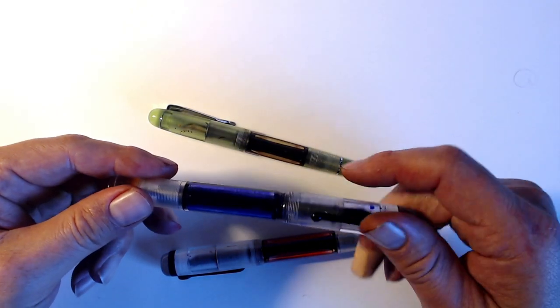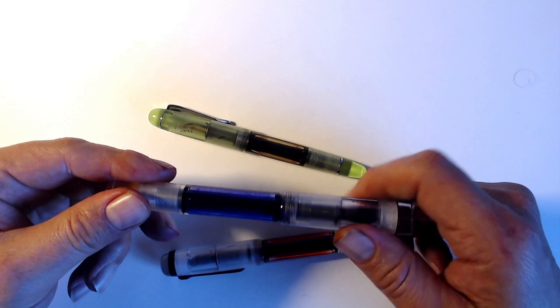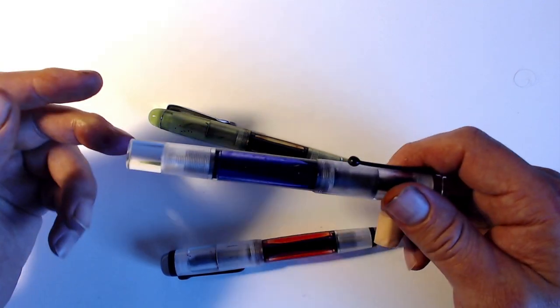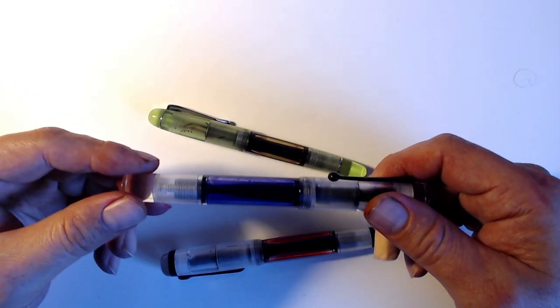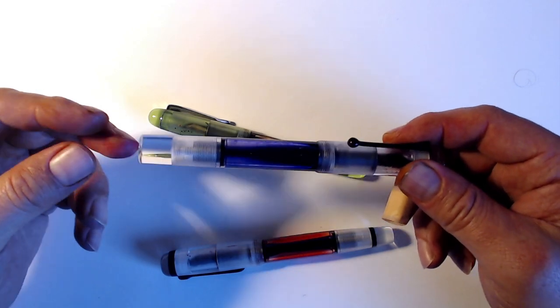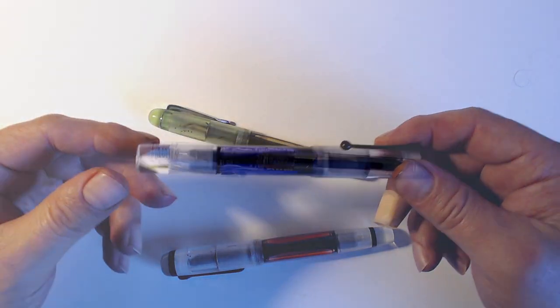Of course, one of the main advantages of eyedropping, the fact that it eliminates moving parts, is lost here, as well as the fact that the rod and twisting mechanism take up additional space in the barrel. It also makes the pen much more difficult to clean. But we can't have everything in life now, can we?